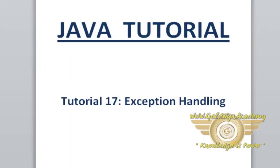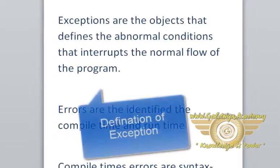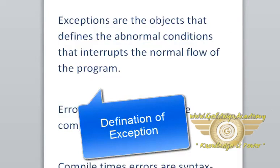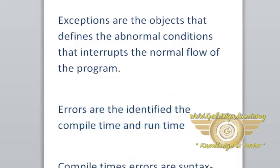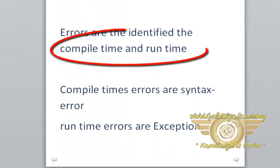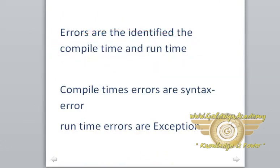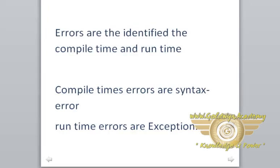First of all, what is an exception? Exceptions are objects that define the abnormal conditions that interrupt the normal flow of the program. Exceptions are nothing but errors. There are two types of errors: compile time error and runtime error. Compile time errors are syntax errors or compile errors. Various runtime errors are exceptions.